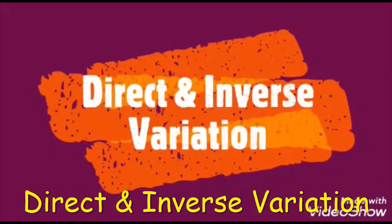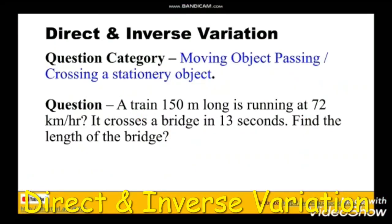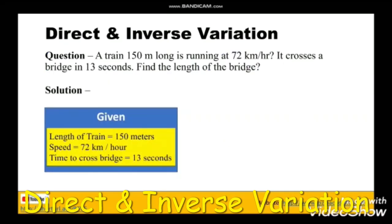Hello students, let us take up a question related to moving object passing or crossing a stationary object having some length. The question is: a train 150 meters long is running at 72 kilometers per hour. It crosses a bridge in 13 seconds. Find the length of the bridge.